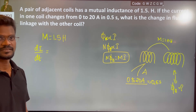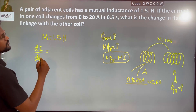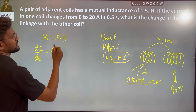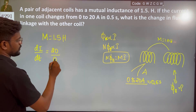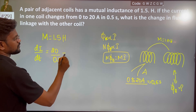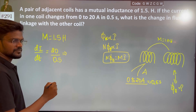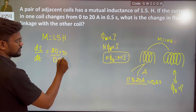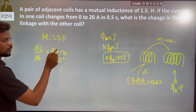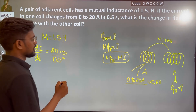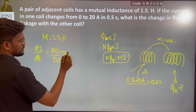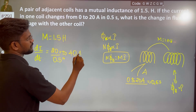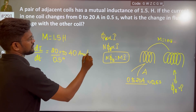Change in flux: final minus initial, so 20 minus 0 over 0.5 seconds. Multiplying and dividing, that becomes 200 by 5, which equals 40 Ampere per second. That is the change in current rate.